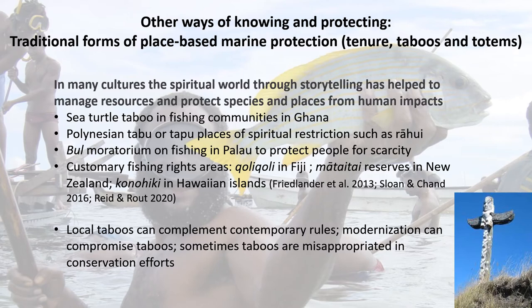In some regions, pre-European populations were at such low densities that the reasons weren't to protect from overfishing. They were social measures such as fishing rights that were to clarify access to resources and avoid conflict between families, villages and communities, as opposed to protecting marine biodiversity.